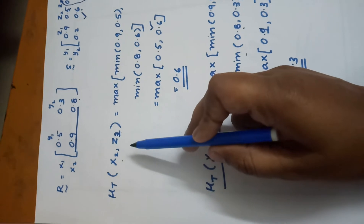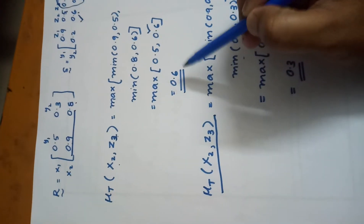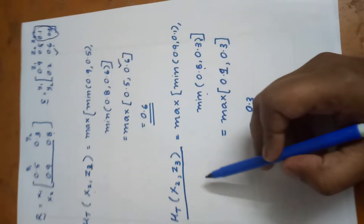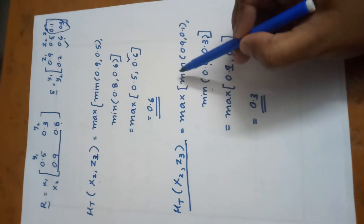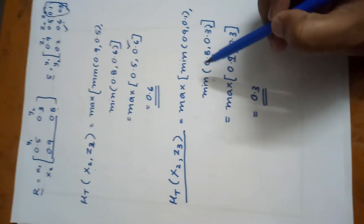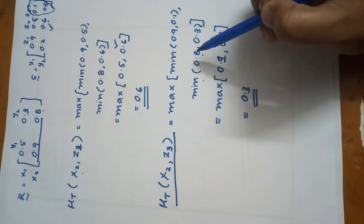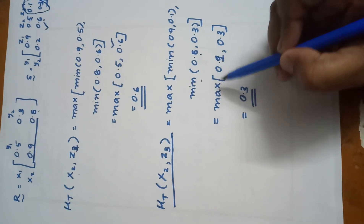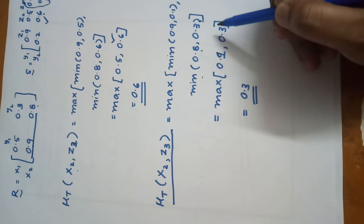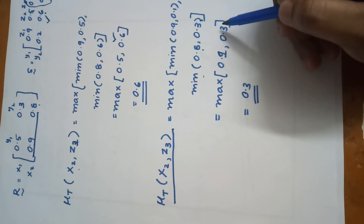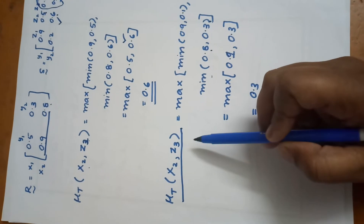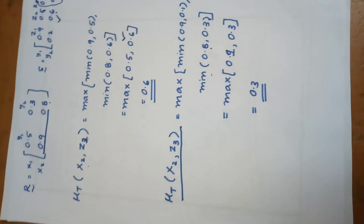μT(x2, z3) equals max of [min(0.9, 0.1), min(0.8, 0.3)], so maximum of 0.1 and 0.3. Among these two values, 0.3 is the maximum value. Therefore μT(x2, z3) = 0.3.